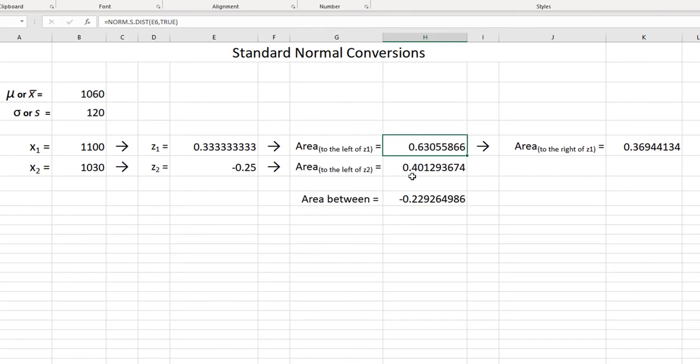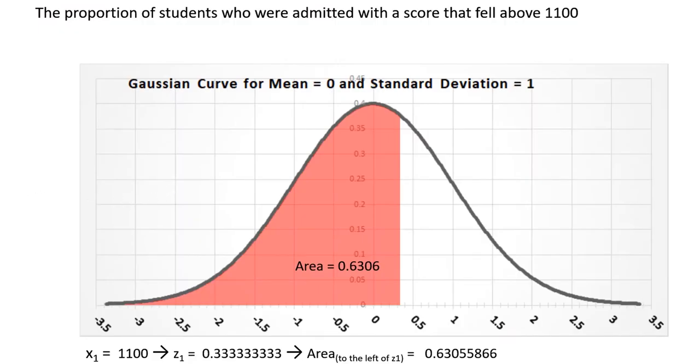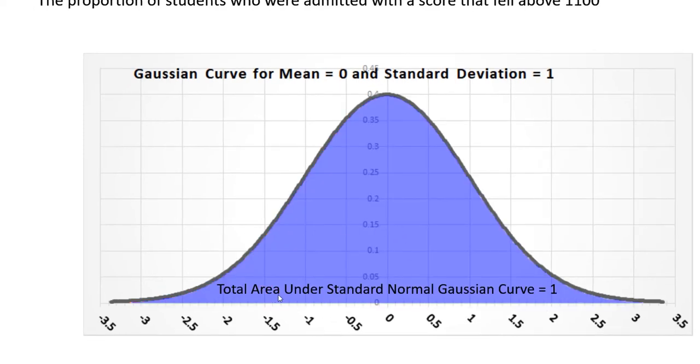So, according to the spreadsheet, the z-value with an x-value of 1100 was positive 0.33333 repeating and that is represented by this magenta line right here and the area to the left of that from the spreadsheet was 0.6306. We know that the entire area under the standard normal curve is 1.